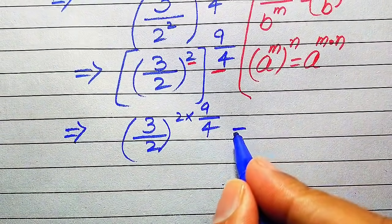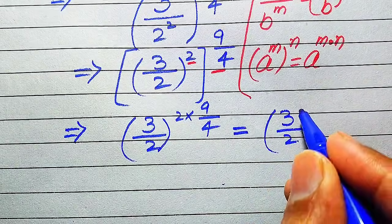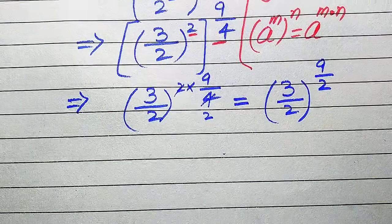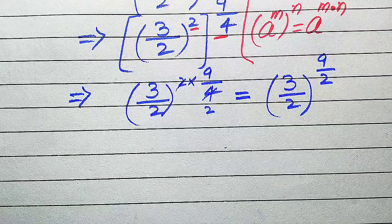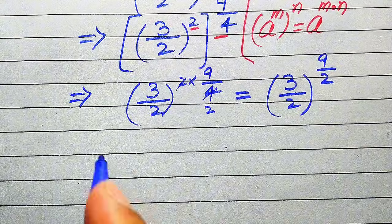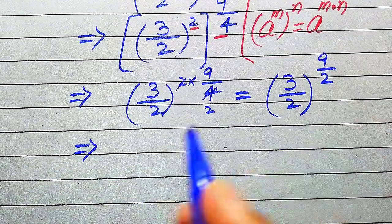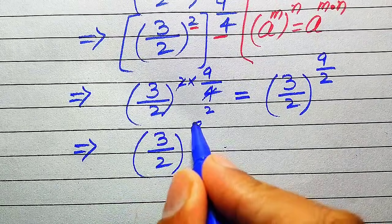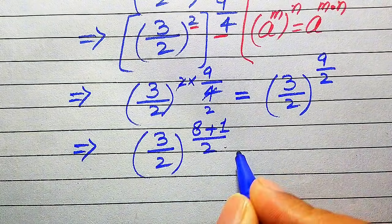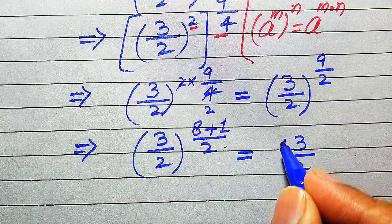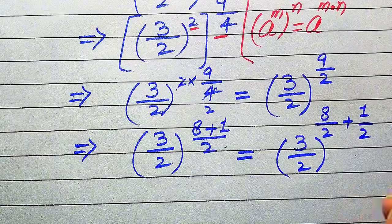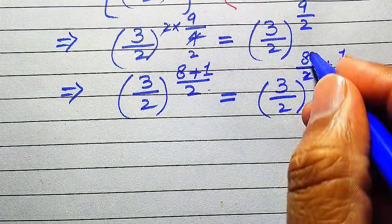We need more simplification. This becomes (3 divided by 2) to the power of 9 divided by 2, since 2 times 4 gives us 4 in the denominator and we get 9/2. Further simplification: we focus on the numerator 9 and break it as 8 plus 1, giving us (8 plus 1) divided by 2. When we break this fraction it is written as (3 divided by 2) to the exponent 8 divided by 2 plus 1 divided by 2.